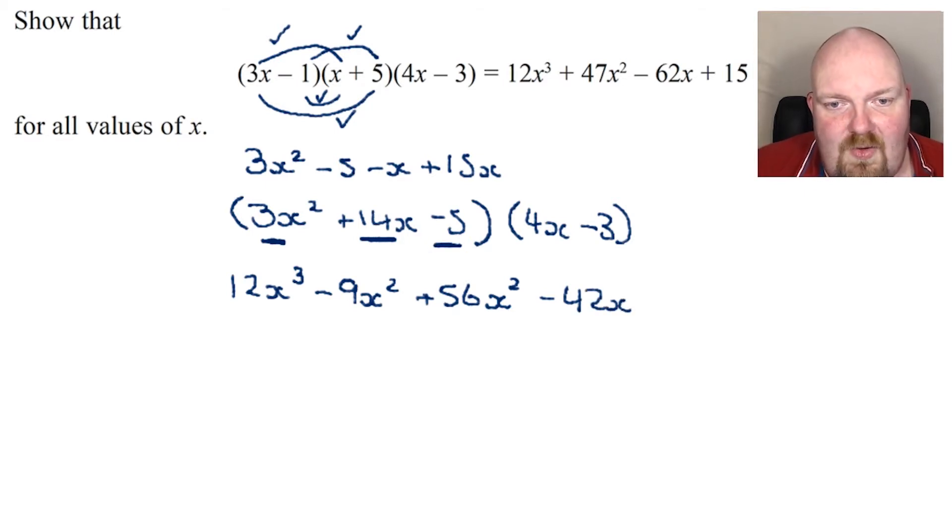Onto this last bit, I've got negative 5 times 4x is negative 20x. And then negative 5 times negative 3 is positive 15. So they're my six factors.